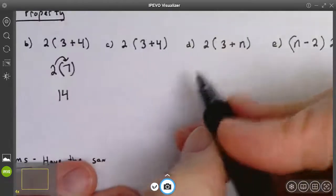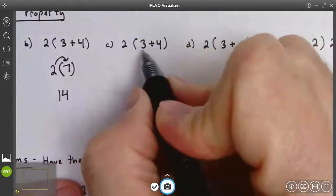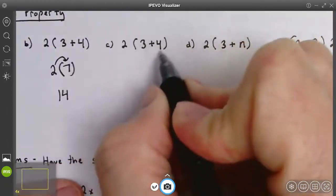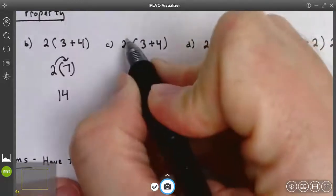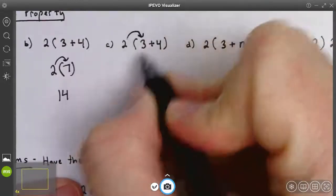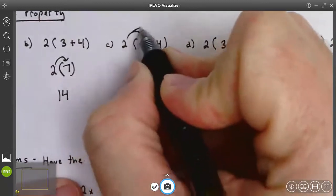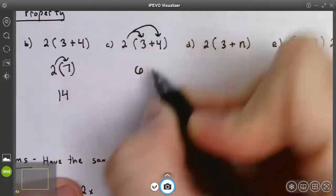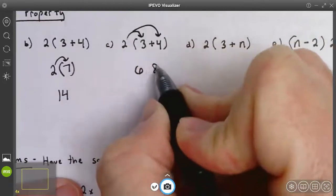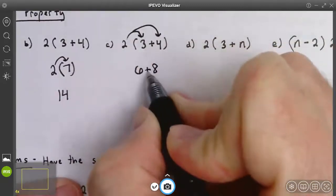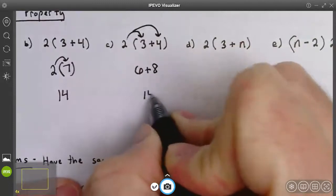Another way to have done that is instead of doing order of operations and adding 3 plus 4 first, we could have distributed. 2 times 3 is 6, 2 times 4 is 8, and that's a positive 8, and then added 6 plus 8 equals 14.